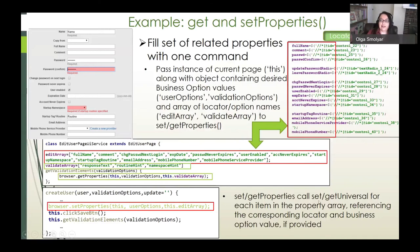So then get and set properties call get or set universal for each item in the property array referencing the corresponding locator and business option value if provided. And this is why we mentioned in the beginning that page objects only define accessors if they're needed. So if an accessor needs some kind of custom handling such as first expanding a panel or switching a tab on a page or any kind of custom wait or other custom parameter, then we define an accessor in the page object. Otherwise we use the UI services to simply set groups of standard input elements all at once and similarly for the getters.